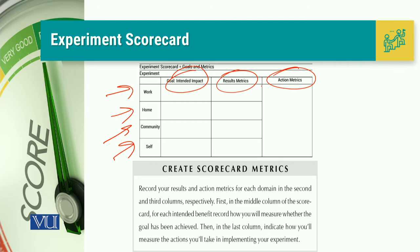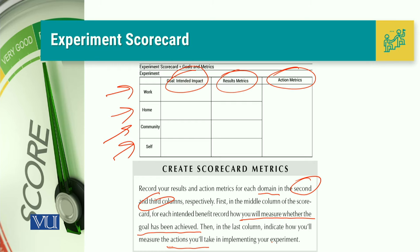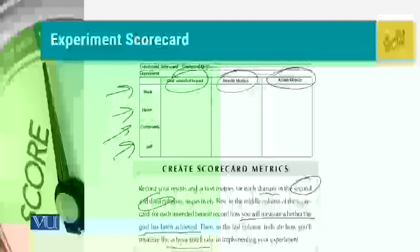You have to record your results and action matrices for each domain. In the middle column of the scorecard, for each intended benefit, record how you will measure whether the goals have been achieved or not — these are the goals you have set for these 4 domains in the initial exercises. Then in the last column, indicate how you will measure the actions you will take in implementing your experiments. Let's talk about some examples.